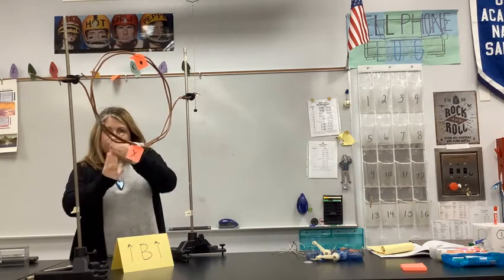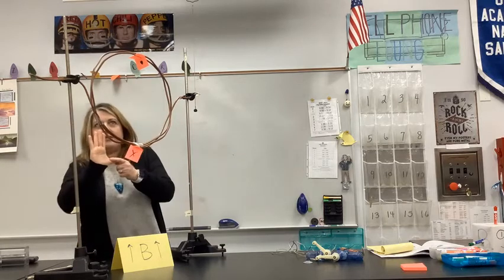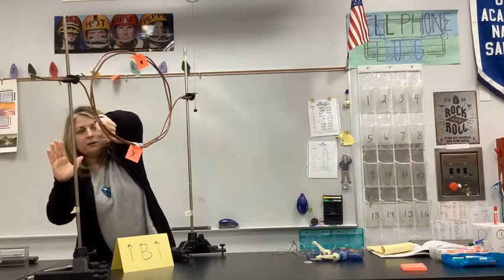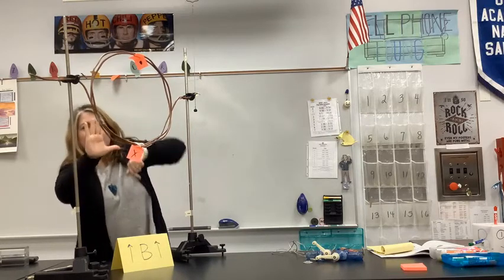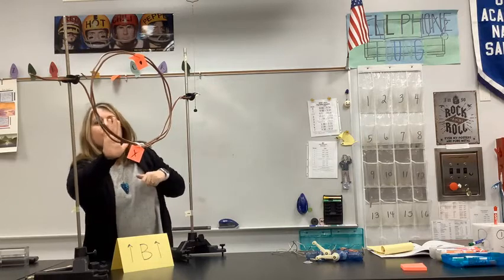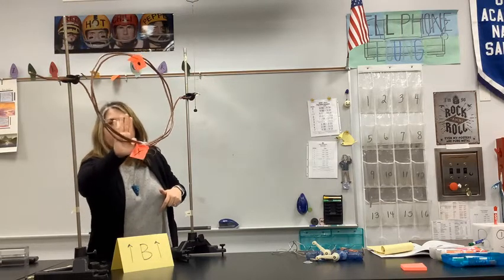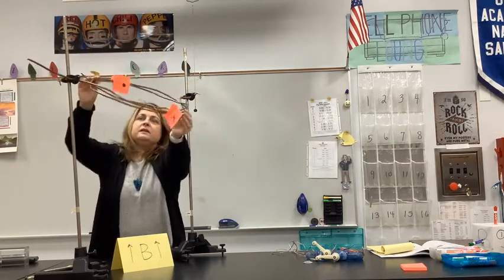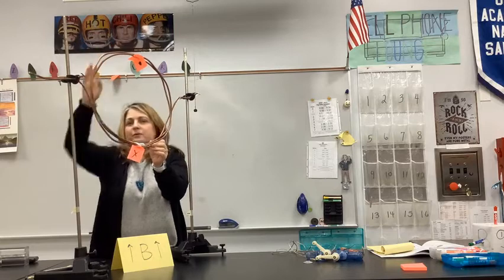Fingers in the direction of the magnetic field — that's up. Thumb in the direction of current. Since this is an X, the current would be going into the coil of wire that way, which would produce a force on this coil of wire in this direction, causing it to spin counterclockwise from your perspective.